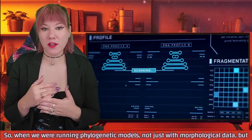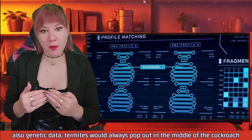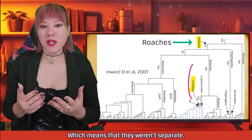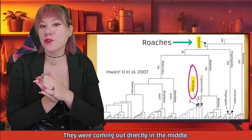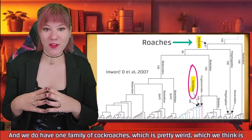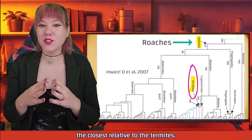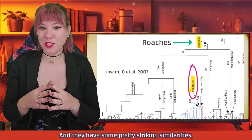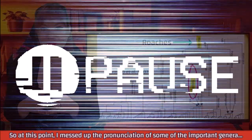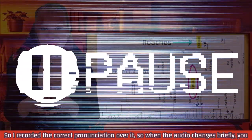So when we were running phylogenetic models — not just with morphological data, but also genetic data — termites would always pop out in the middle of the cockroach lineage, which means they weren't separate. They weren't coming out next to the cockroach lineage; they were coming out directly in the middle. We do have one family of cockroaches — which is pretty weird — that we think is the closest relative to the termites, and they have some pretty striking similarities. Note: I messed up the pronunciation of some important genera, so I recorded the correct pronunciation over it — when the audio changes briefly, you know what happened.